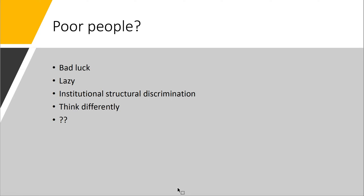When we think of poor people, we consider bad luck, laziness, institutional and structural discrimination, racial differences, external pressures, and internal pressures. We all know people who have had bad luck, people who are lazy, people who have been discriminated against for various reasons. The question is how big a role does each of these play in why someone is poor?